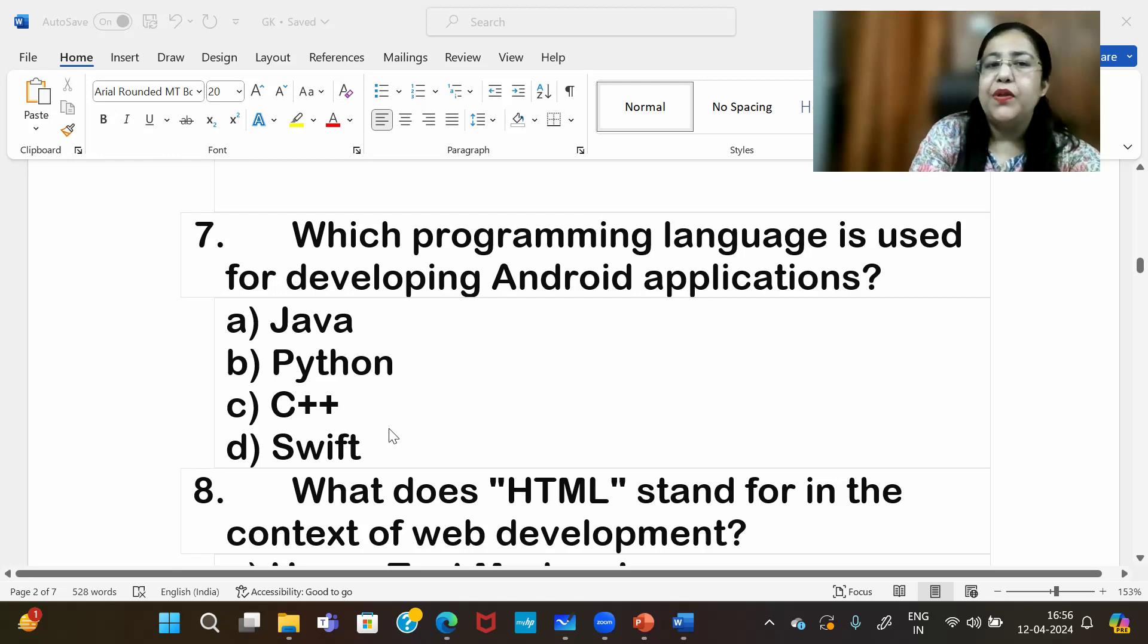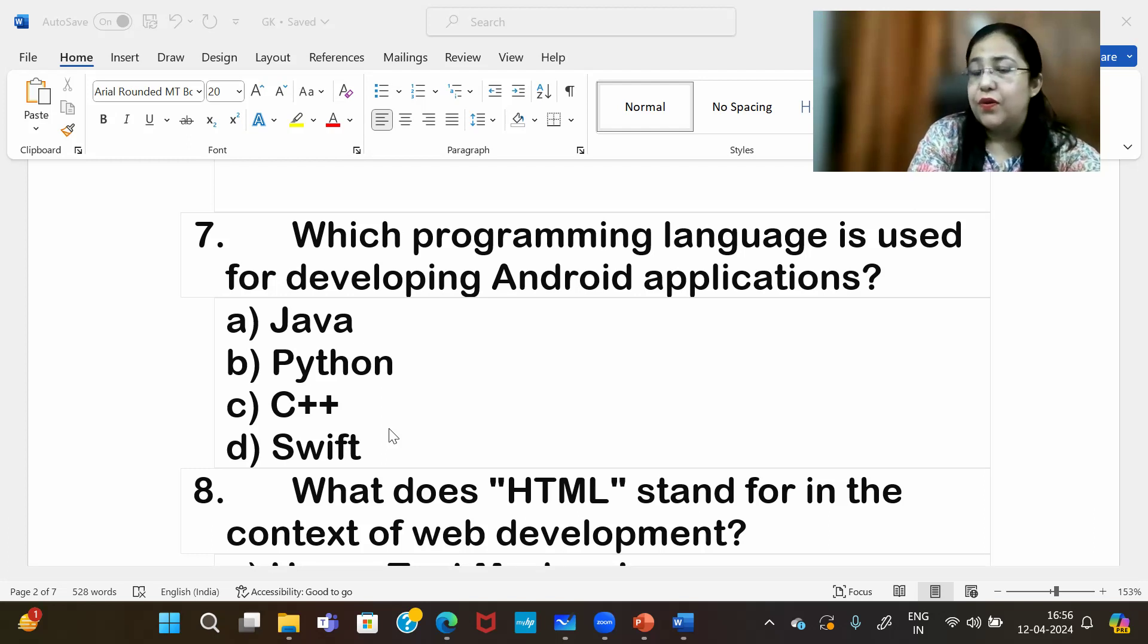Seventh question: which programming language is used for developing Android applications? Out of the given options, the answer is Java. We have two languages that we use for Android applications: one is Java, one is Kotlin. Nowadays we have started using JavaScript also for mobile applications. Specifically for Android. If you want to ask for iPhone, then Swift language is used for iOS mobile applications. But this answer is Java.